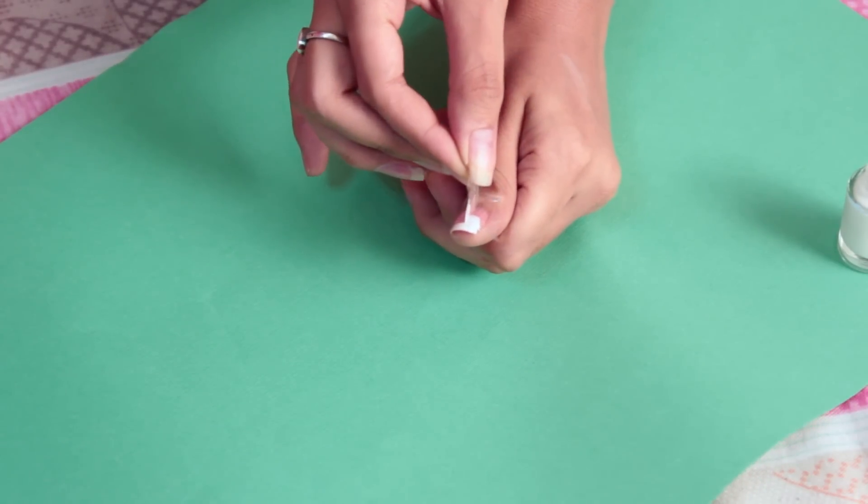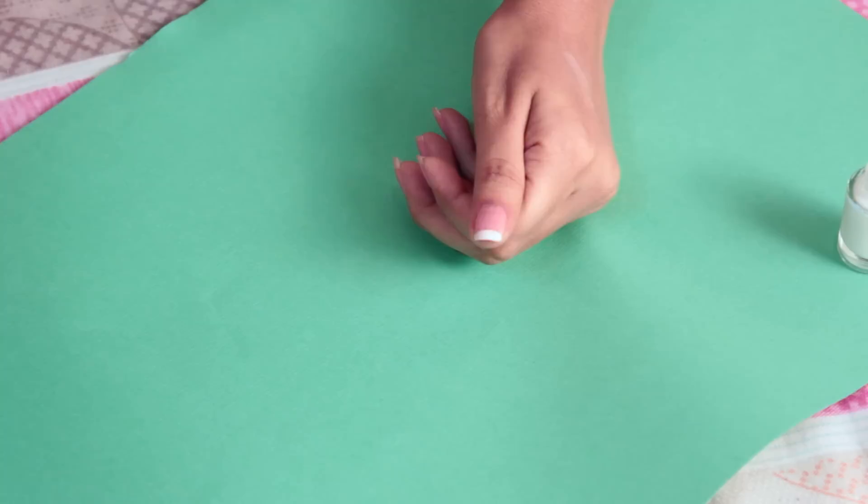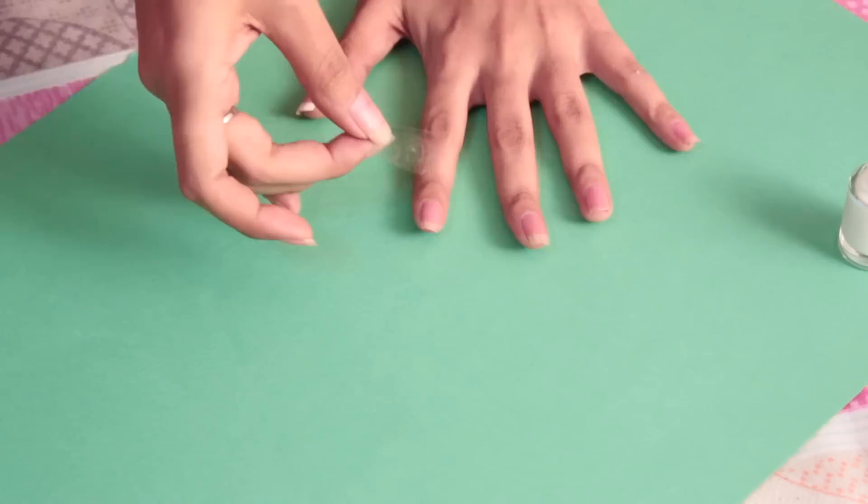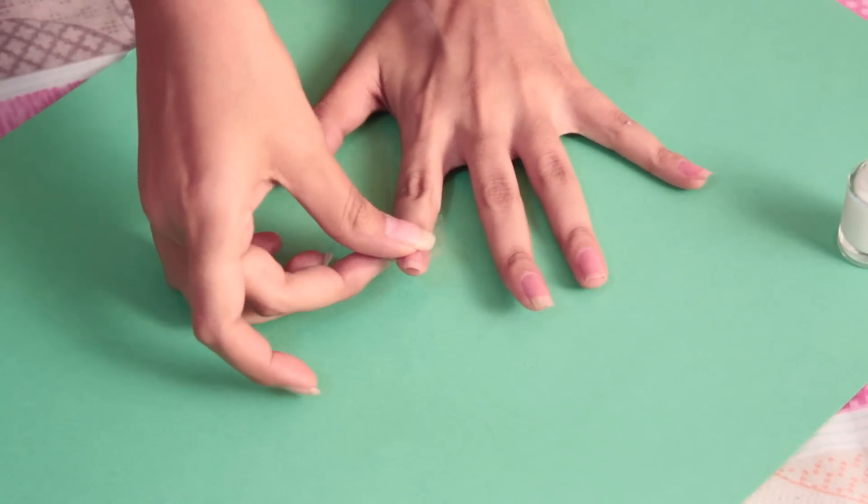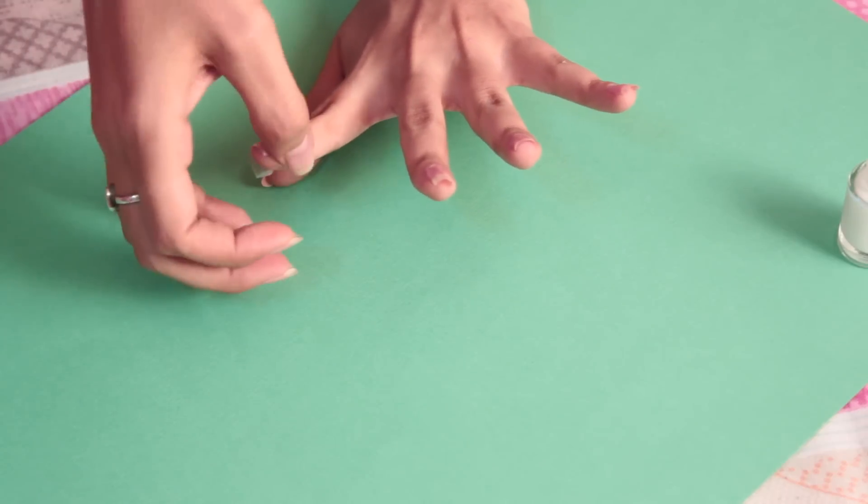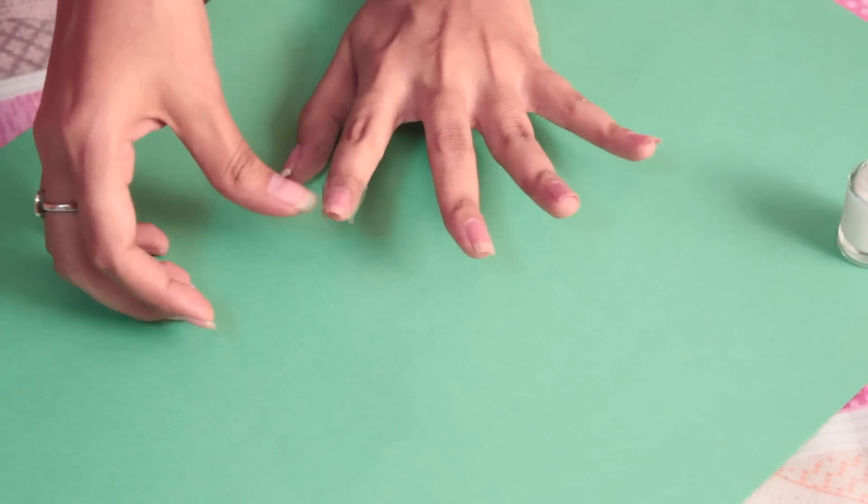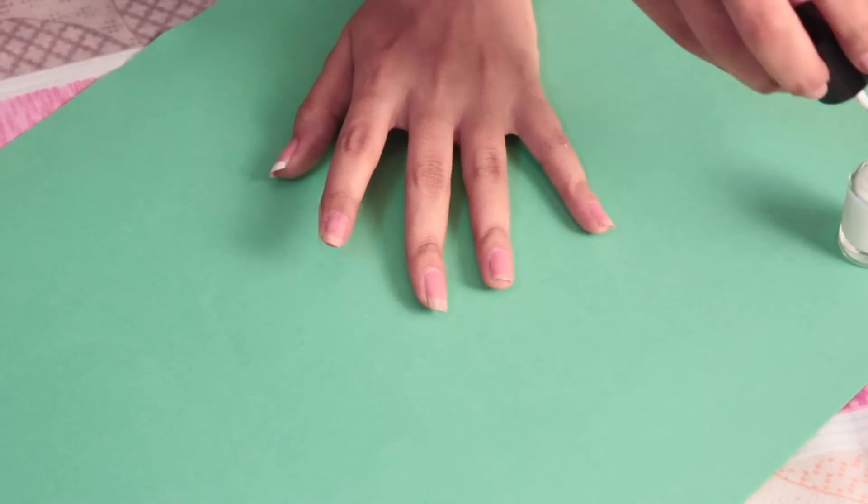Now you can gently peel off the sellotape. Make sure it's not too hard because you don't want your base peeling off making it look uneven. And your French nail is ready! So this is really simple, guys. You just have to keep repeating the same steps on all the nails and you will have a French nail polish in absolutely no time.